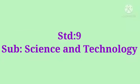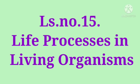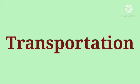Standard 9, Subject Science and Technology, Lesson No. 15: Life Processes in Living Organisms. Let us see about transportation. We have studied how digested food or oxygen inhaled by lungs is transported to every cell of the human body. The food absorbed by the digestive system is converted into energy. This energy and oxygen are both transported via blood throughout the body. Transportation is a process by which substances are either synthesized or absorbed in one part of the body and reach to another.